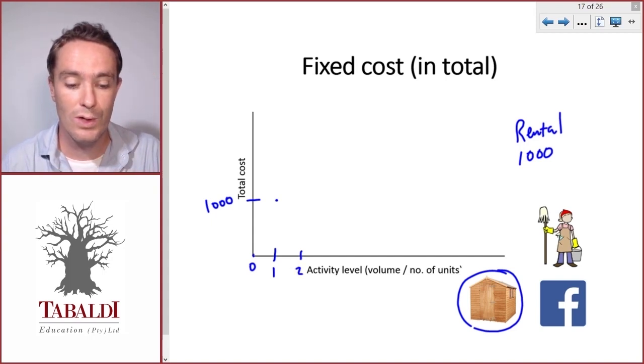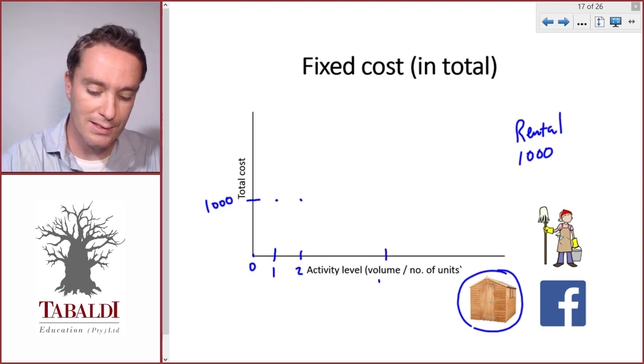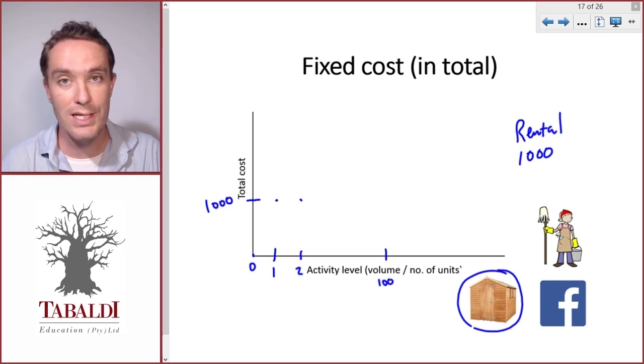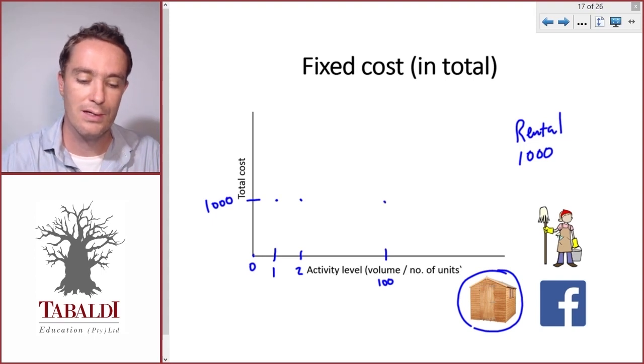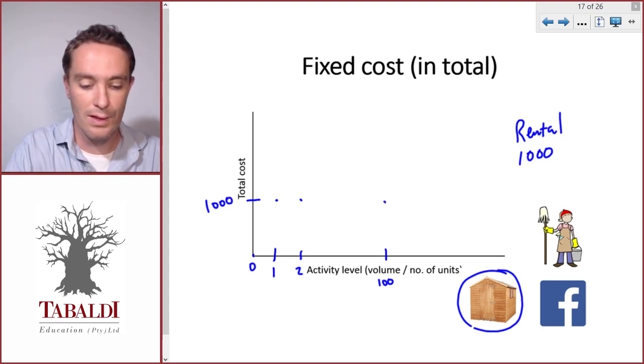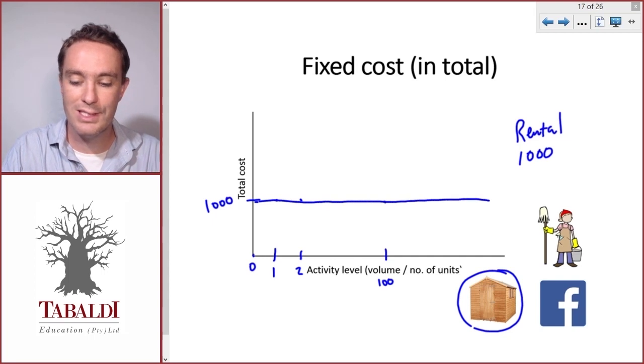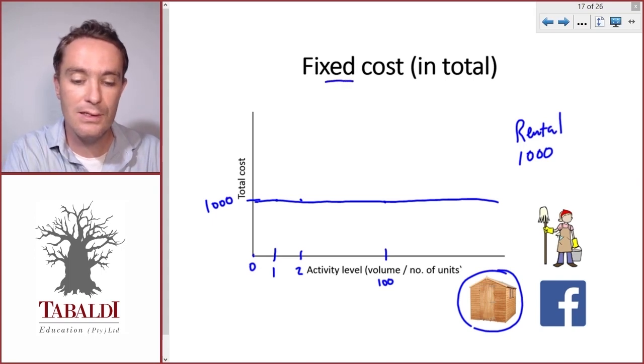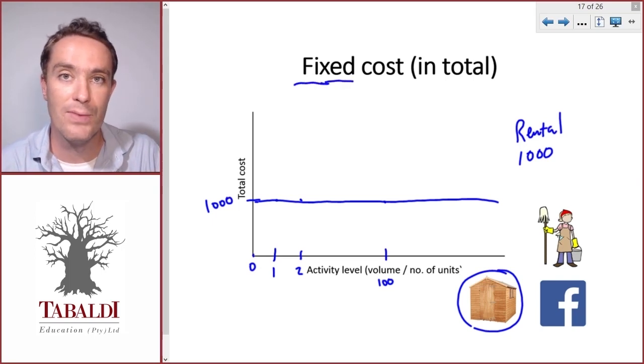So then what if we make two tables? What will the total rental then be? It'll still be a thousand. And even if we make a hundred tables, provided that we will be able to fit the production of hundred tables into this shed, we'll still only pay a thousand. So if we draw a line through this, you'll see it's a flat horizontal line. There's no change in the total cost when there's a change in the activity level, and that is called a fixed cost. And that makes sense because the cost stays fixed regardless of the number of units or the activity level.